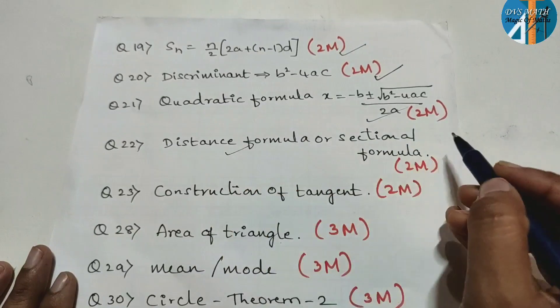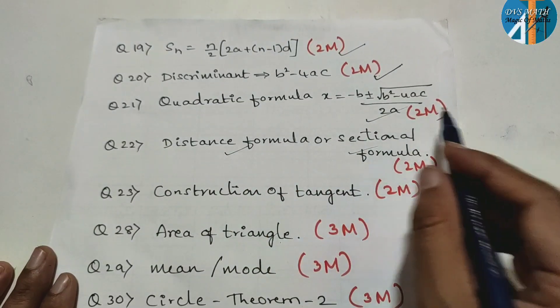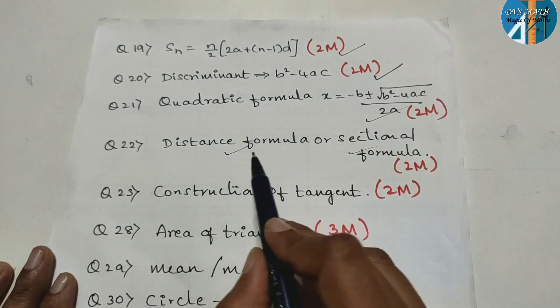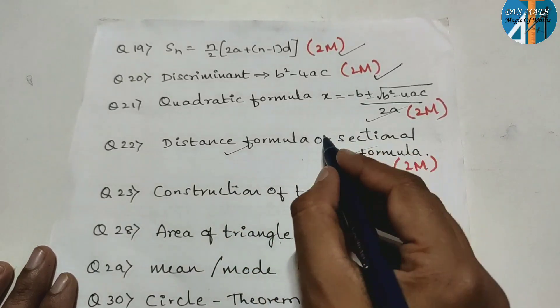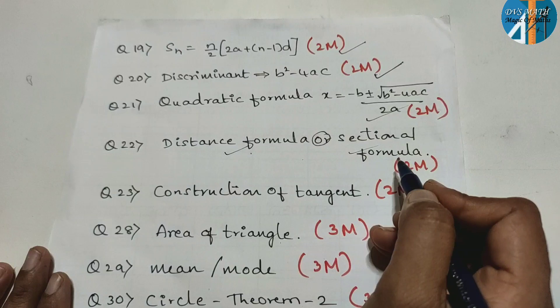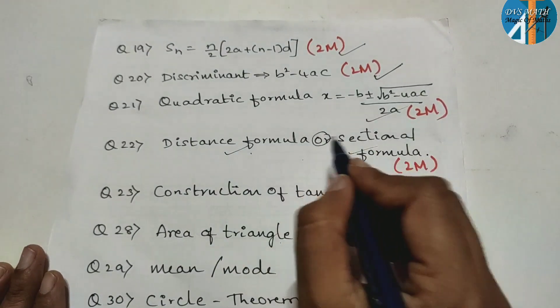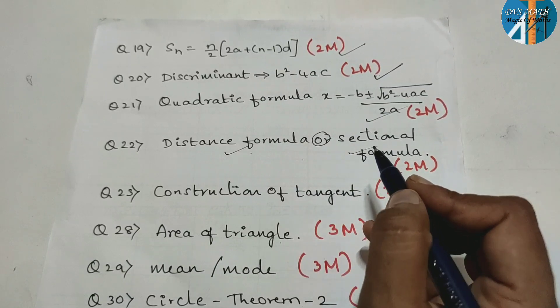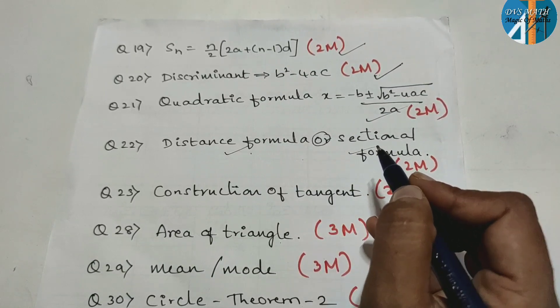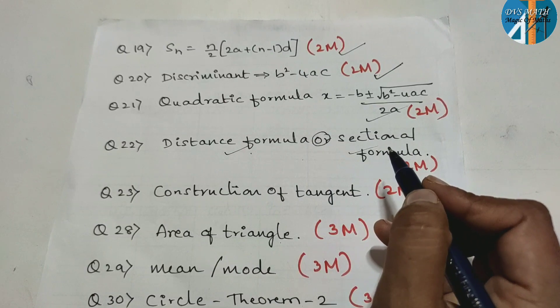Next is distance formula, section formula. You are going to learn distance and section. In this paper, there is a choice in this paper, distance and section. This is the coordinate geometry lesson. You can use this lesson, easy to attend this question.